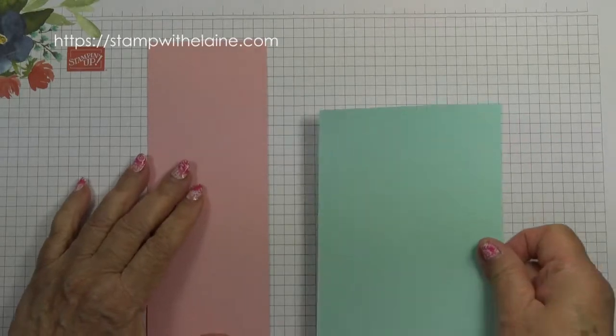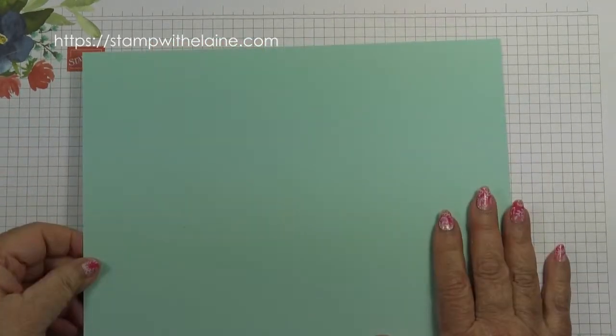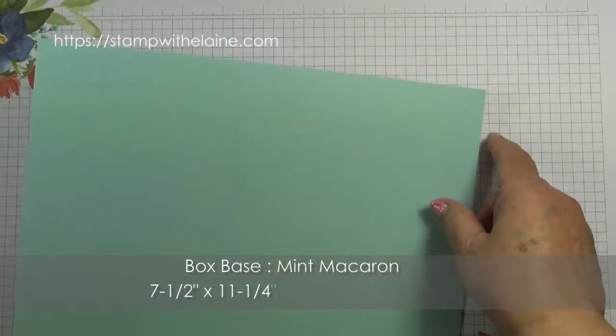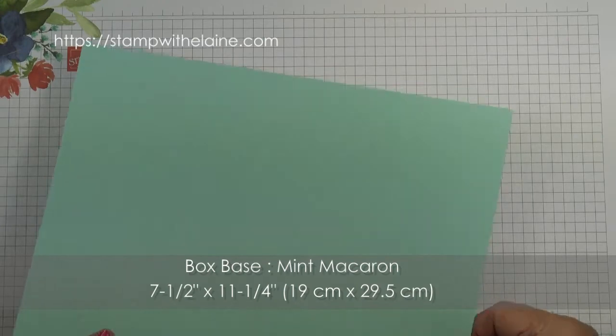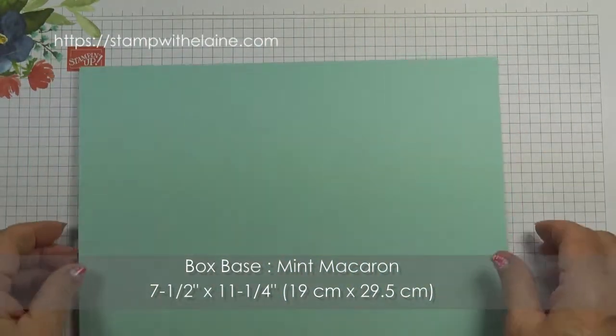Basic rhinestones. A scrap of blushing bride and mint macaron to cut the labels. Box base measures seven and a half by eleven and a quarter inches. In metric that's 19 centimeters by 29.5 centimeters.